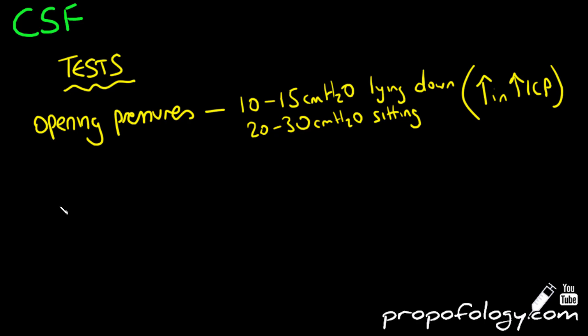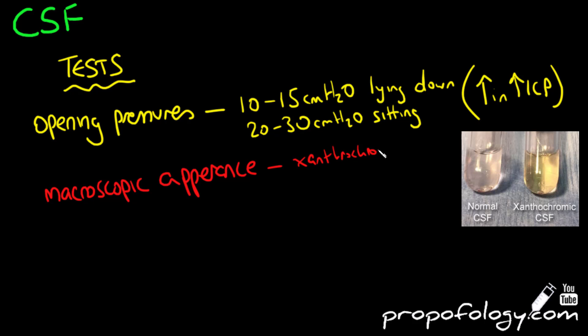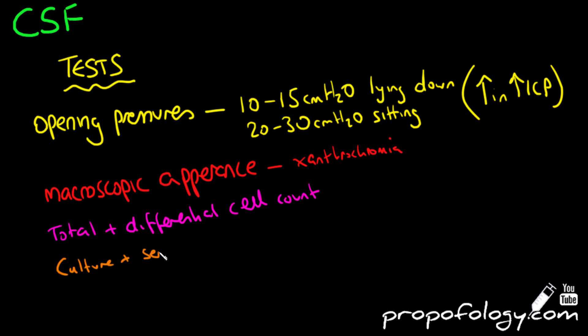This is elevated in raised intracranial pressure, so that's why this is a useful test. You can look at the macroscopic appearance of the CSF and see if there's any xanthochromia, which can be seen in subarachnoid hemorrhage. You can look for the total and differential cell count if you send it away to the lab. You can do bacterial cultures and sensitivities on it to see what antibiotics any bugs growing in it would be sensitive to.